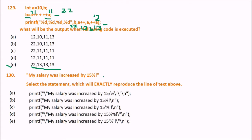Next question: 'My salary was increased by 15%' — this statement exactly reproduces the given line of text. The answer is D. The double quotes need a backslash escape sequence, percent is printed using two percent signs (%%), and exclamation and closing double quotes also use backslash escape sequences. So D is the answer.